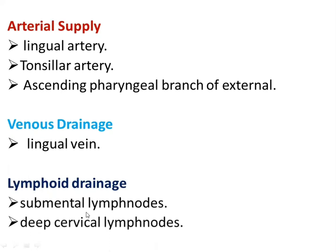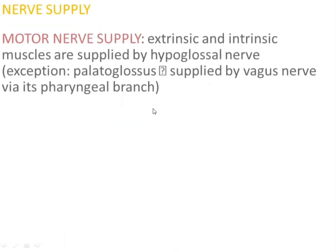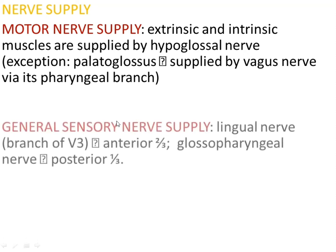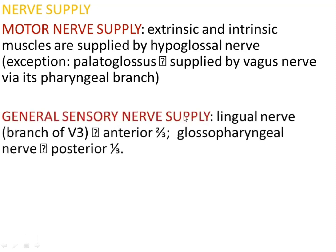For the nerve supply, the motor nerve supply: all extrinsic and intrinsic muscles are supplied by the hypoglossal nerve, which is the 12th cranial nerve. There is one exception — the palatoglossus muscle is supplied by the vagus nerve through the pharyngeal branch. For general sensory supply, the lingual nerve, which is the branch of the trigeminal nerve mandibular division, supplies the anterior two-thirds of the tongue.